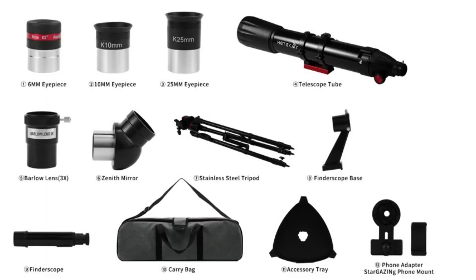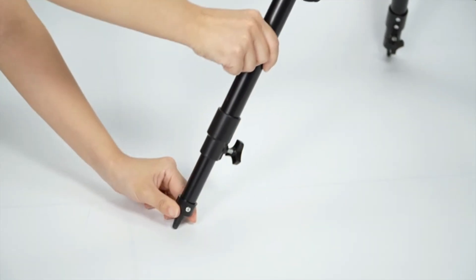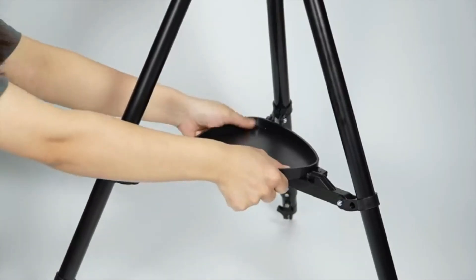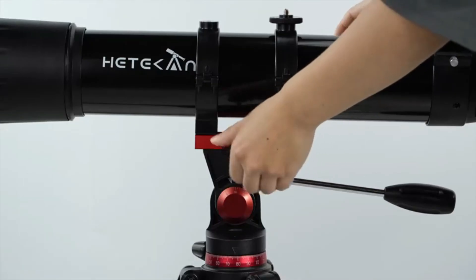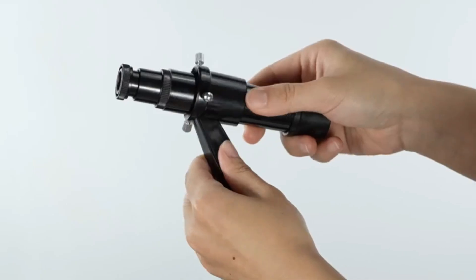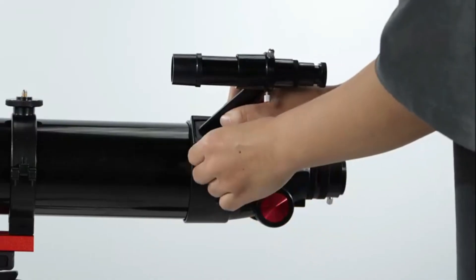90mm Large Aperture This 90mm Aperture Telescope offers excellent light-gathering capability for brighter, more impressive images. Fully multi-coated optical glass lenses minimize light reflection, delivering stunning imagery while protecting your eyes.